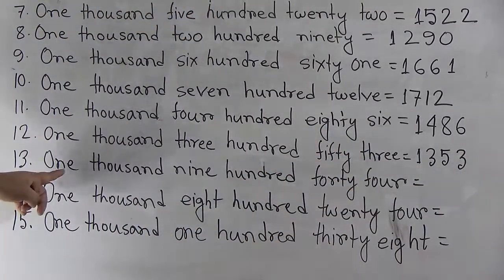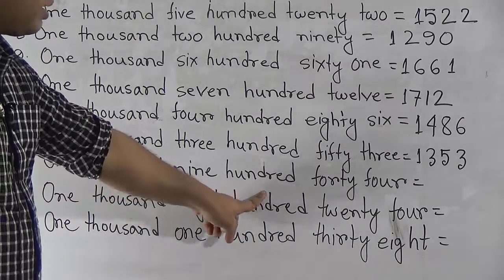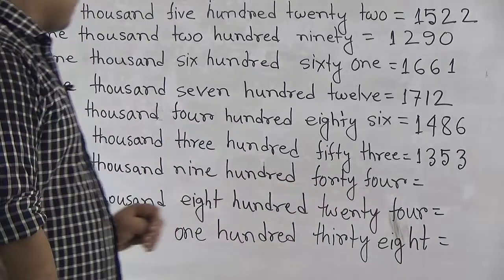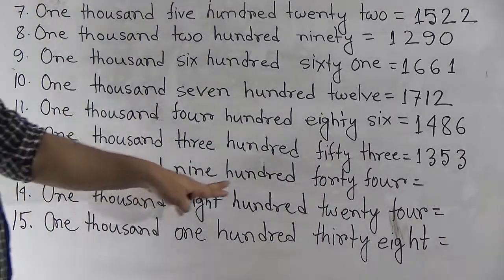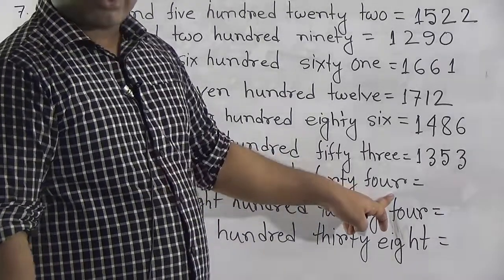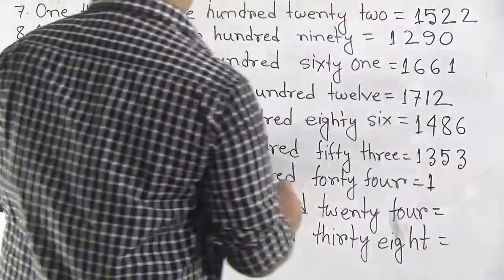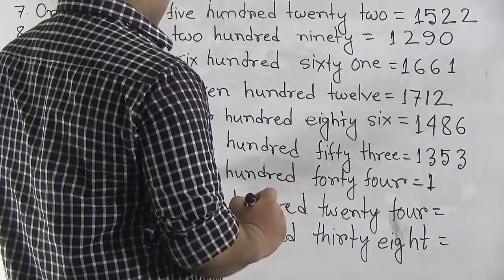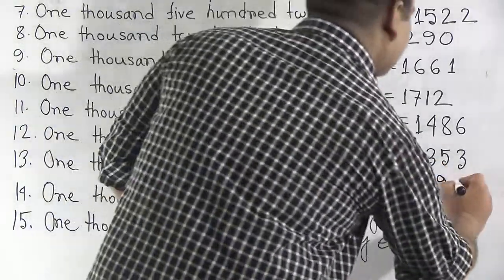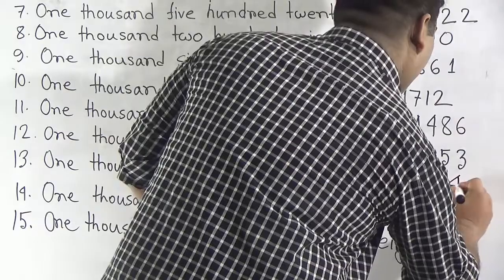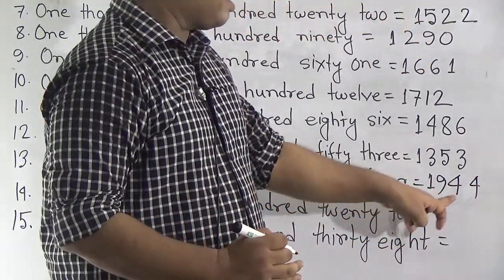Our next number is 1,944. For 1,000 we write 1, 800 means 8, and 44 means 4 and 4. So it is called 1,944.